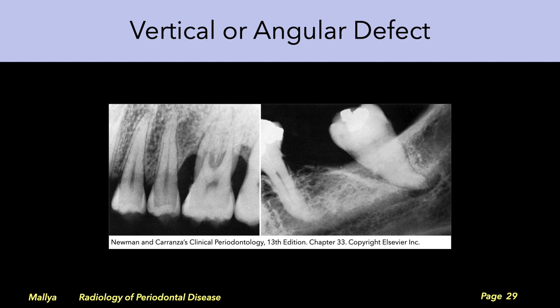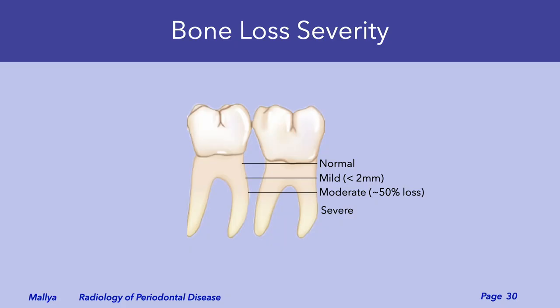These radiographs demonstrate vertical bone loss. Note how the margin of bone is oblique and at an angle to the tooth surface. In addition to categorizing the pattern of bone loss, radiographs also help assess the severity. Mild bone loss is when there's approximately 2 mm of bone loss. Moderate bone loss is when the bone extends to approximately 50% of the root length, and bone loss greater than this level is considered severe.